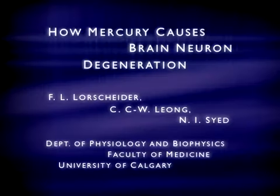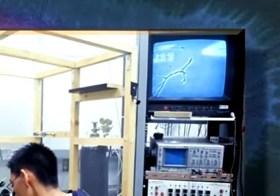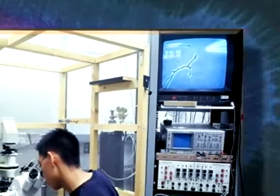How Mercury Causes Brain Neuron Degeneration. Mercury has long been known to be a potent neurotoxic substance, whether it is inhaled or consumed in the diet as a food contaminant.